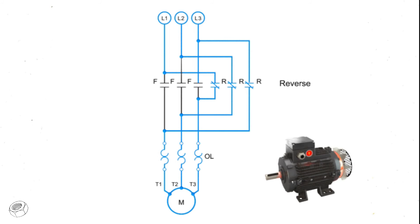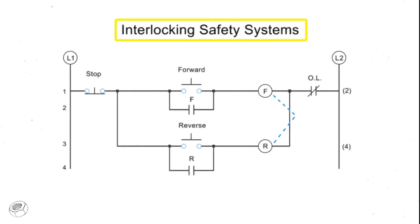In order to protect against this kind of short circuit, manufacturers employ three types of interlocking safety systems. Interlocks create a web of safety checks within a circuit to prevent both forward and reverse coils from being energized at the same time. They are represented in circuitry diagrams by a dotted line.